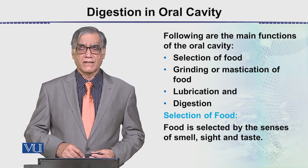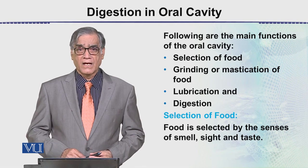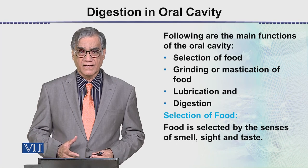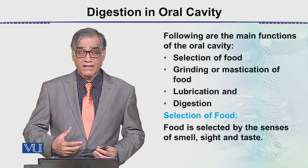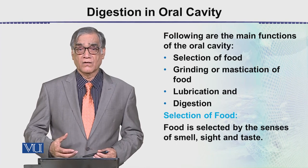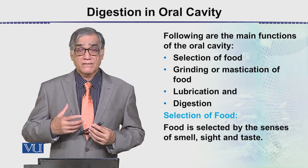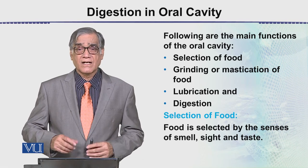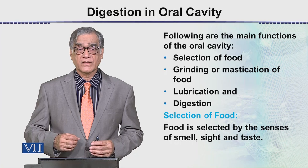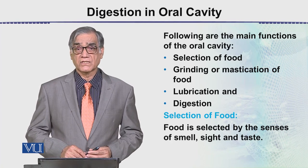In the selection of food, it is the tongue which plays a very important role. This is supplemented by other sense organs like the eyes and nose — smell. If it is good to taste, good to look at, and if there is a good smell, then we start grinding it. The grinding process is brought about by the teeth, specifically the cheek teeth.